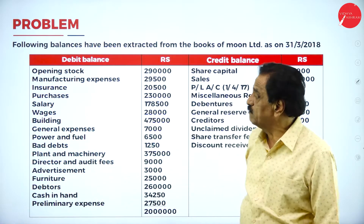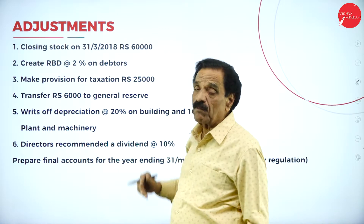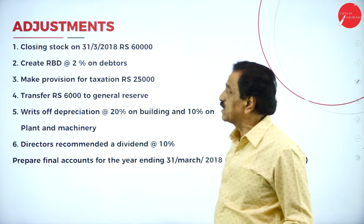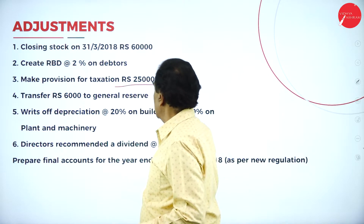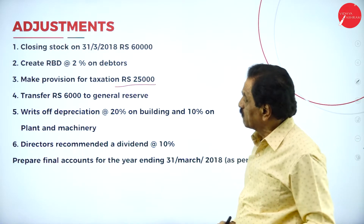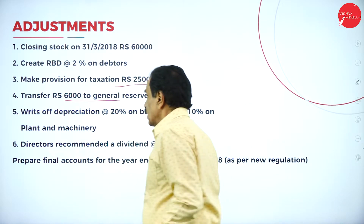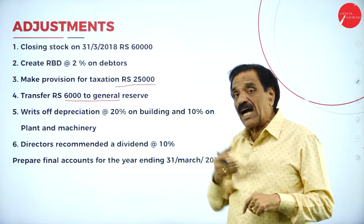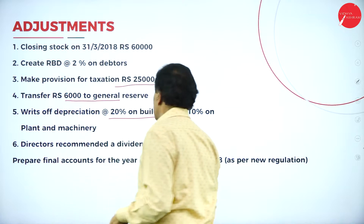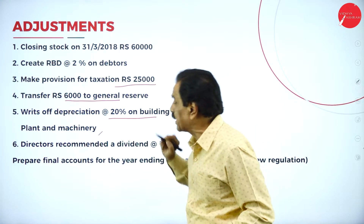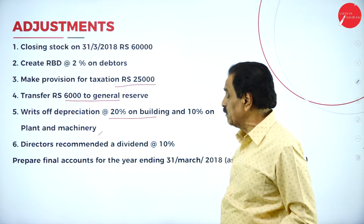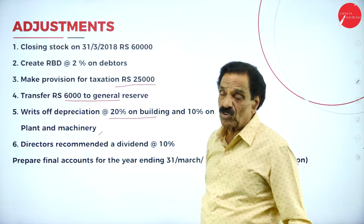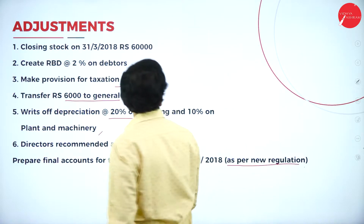Now we move on to adjustments. Closing stock will come in cost of goods sold: opening stock + purchases minus closing stock, and also on the current assets side. Create RBD at 2 percent on debtors. Make provision for taxation — that should be deducted from profit. Transfer ₹6,000 to general reserve — deducted from profit first, then added to general reserve. Rate of depreciation: 20 percent on building, 10 percent on machinery. Director recommended dividend of 10 percent. Prepare final accounts for the year ending 31st March as per new regulation.